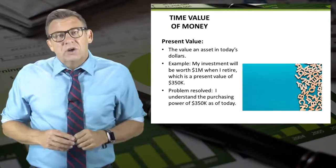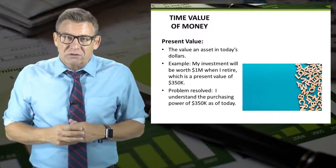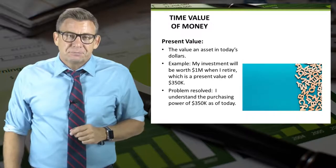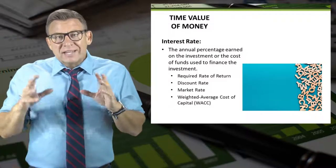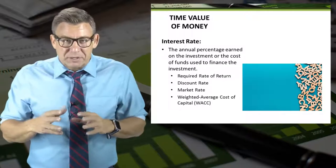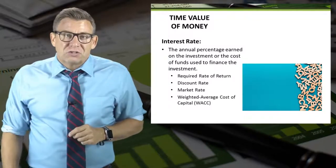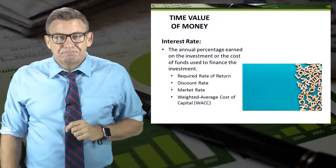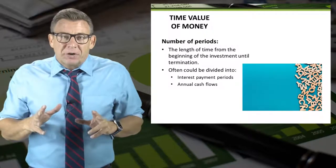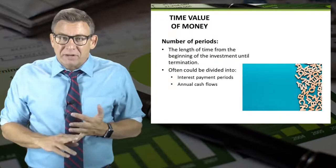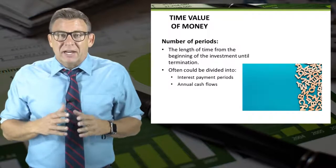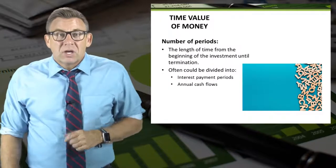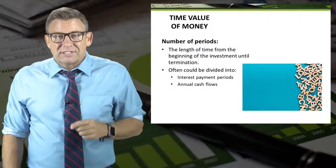In accounting, we only use present value for our calculations — finance uses future value, but accounting does not. The interest rate is the annual percentage earned on the investment or the cost of funds used to finance the investment, and it has other names shown on the slide. Finally, the number of periods is the length of time from the beginning of the investment until the end, which could be divided into interest payment periods or annual cash flows. You will be seeing these terms in action in the next several videos.